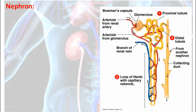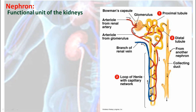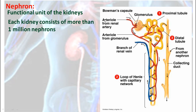The nephron is the functional unit of the kidneys. This is where the urine is formed and extracted, and each kidney consists of more than one million nephrons, so one human being has more than two million nephrons. They are very thin or fine tubes — we call them tubules — and they are surrounded by blood capillaries everywhere.